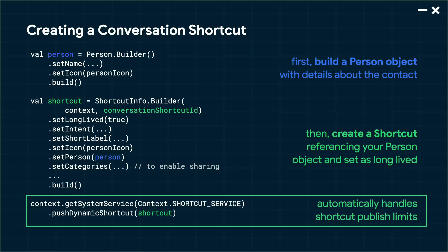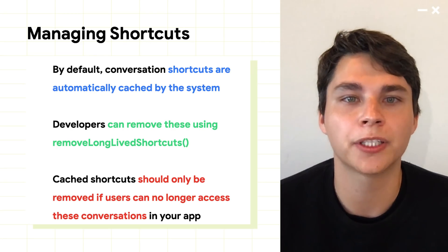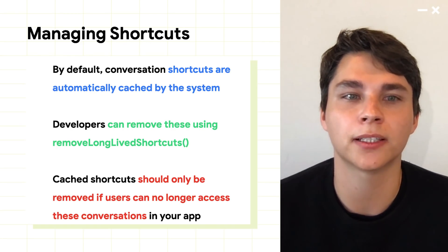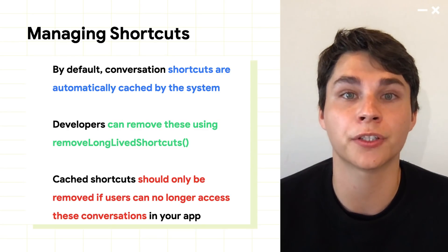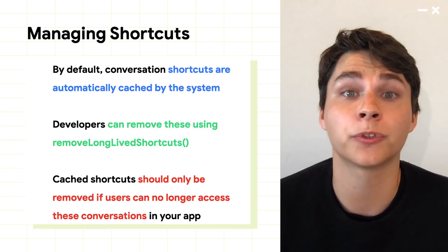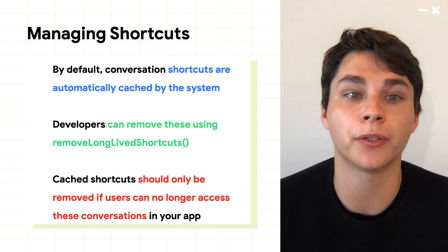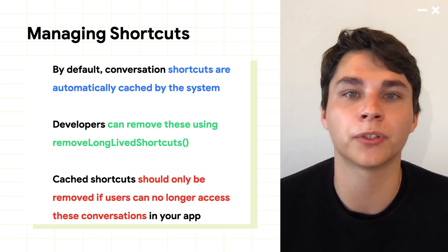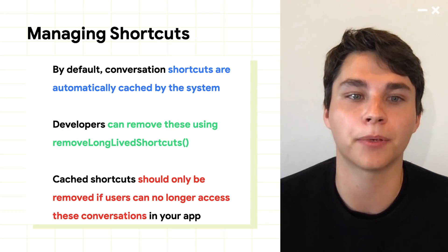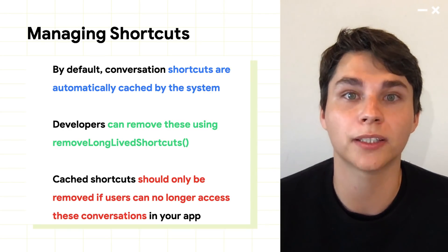The operating system limits apps to publish only 10 shortcuts at a time. However, we've introduced the push dynamic shortcut method, which automatically handles logic related to this limit. Setting a shortcut to be long-lived means that it will be automatically cached by the system so that it can be referred to across the various ways users will interact with conversations in the OS. Developers are able to remove conversations from the cache by using the remove long-lived shortcuts method in ShortcutManager. Apps should only do this if the user is no longer able to access these conversations from within the app — for example, if a user has deleted or blocked a contact.